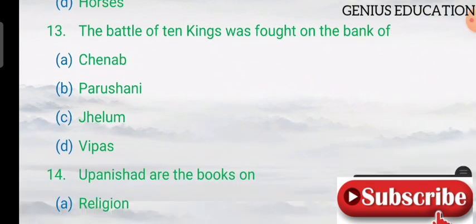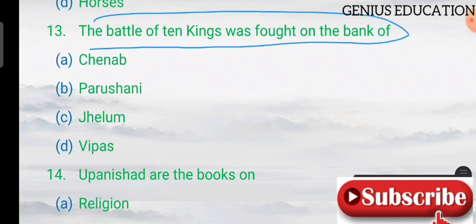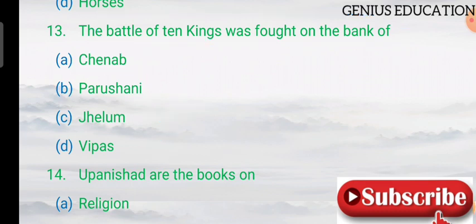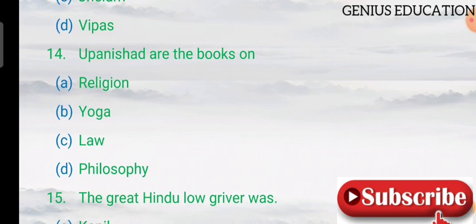Question 13: the Battle of the Ten Kings was fought on the bank of which river? Options include Chenab, Purushuni, Jhelum, and Beas. The answer is Purushuni.